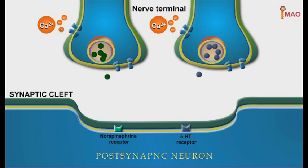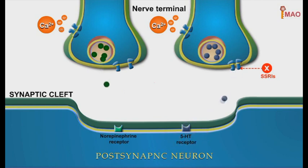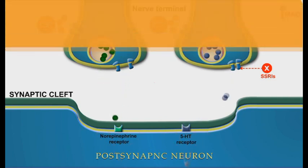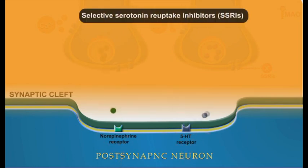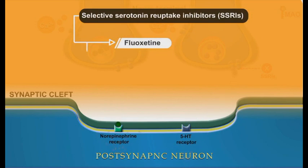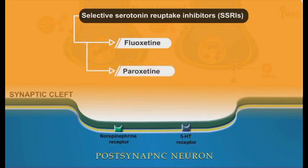Another important and popular antidepressant drug group is selective serotonin reuptake inhibitors, known as SSRIs. This group of drugs works more selectively toward the inhibition of the reuptake of serotonin only. Examples of SSRIs are fluoxetine and paroxetine.